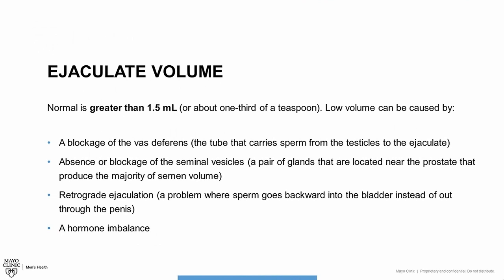Another cause of low semen amount can be retrograde ejaculation. This is where the sperm goes backward into the bladder instead of coming out through the penis. Lastly, the cause can be due to a hormone imbalance.